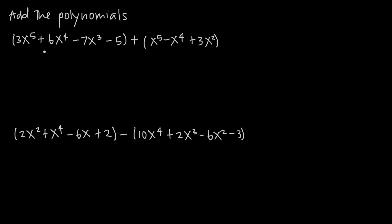Essentially what that means is that we have multiple terms. We have one term 3x to the fifth, another term 6x to the fourth, another term negative 7x cubed. These terms can include variables like x's, exponents like the 5, 4, and 3, and coefficient terms like 3, 6, and negative 7. They can also include constant terms like negative 5.